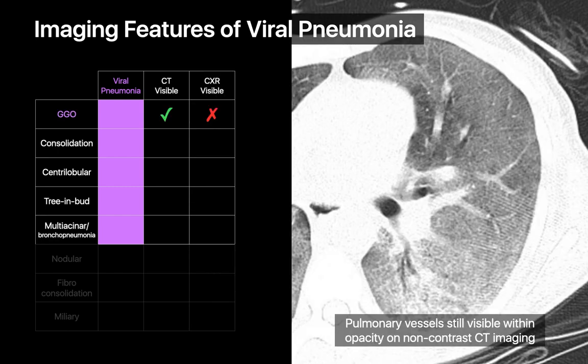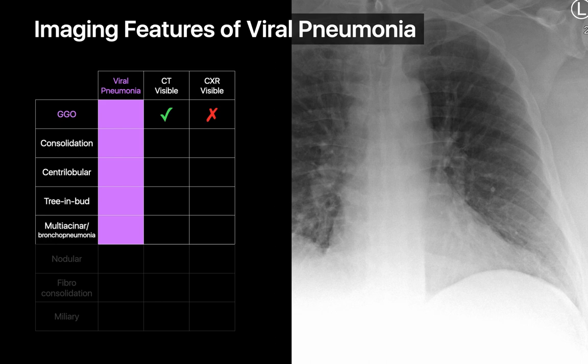Viral pneumonias can present as ground-glass opacities. Ground-glass opacities are regional lung opacities that are loosened enough to still permit visualization of the background pulmonary vessels on non-contrast CT. While ground-glass opacities are visible on CT, they are not visible on chest x-ray, as demonstrated by the normal appearing left lung on this chest x-ray obtained at the same time as the chest CT. So try to avoid using the term ground-glass on chest x-ray reports.